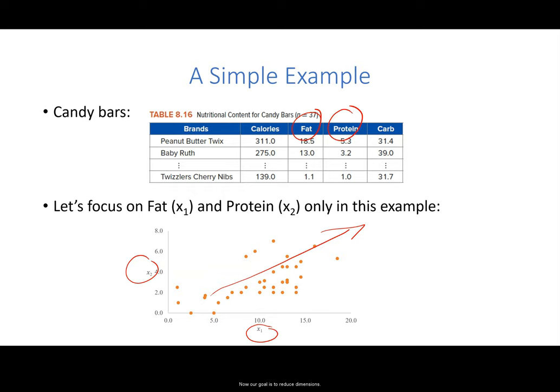Now our goal is to reduce dimensions. With only two variables, the only dataset with less dimensionality would be a one-dimensional dataset with only one variable, and that would mean removing either the fat or protein variable from the dataset. Is this a viable solution? If it is, which variable should we remove?